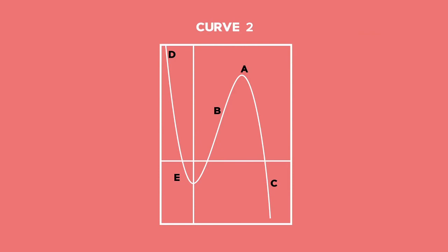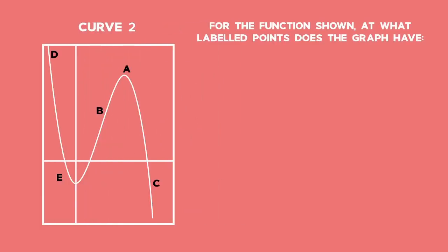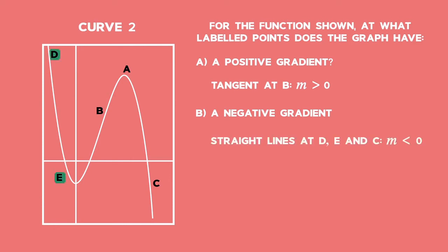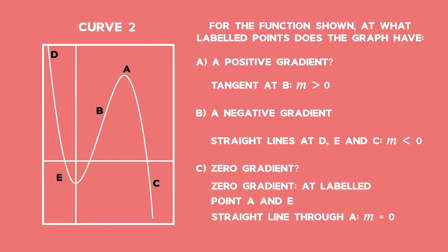Curve 2: For the function shown, at what labeled point does the graph have: a) a positive gradient? Tangents drawn at point B will have a positive gradient. b) a negative gradient? Tangents drawn at point D, E and C will slope to the left and have a negative gradient. c) zero gradient? Tangents through point A and E will be horizontal and have a gradient of zero.